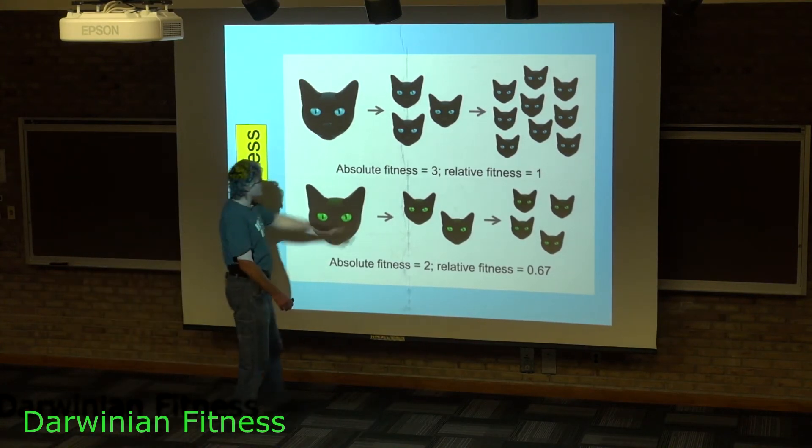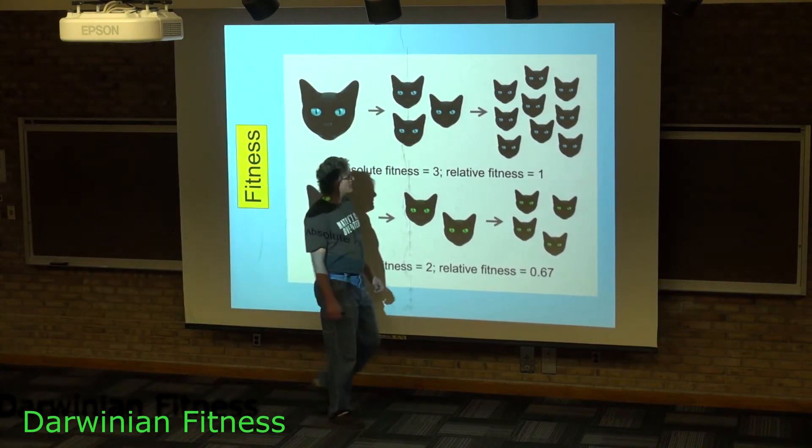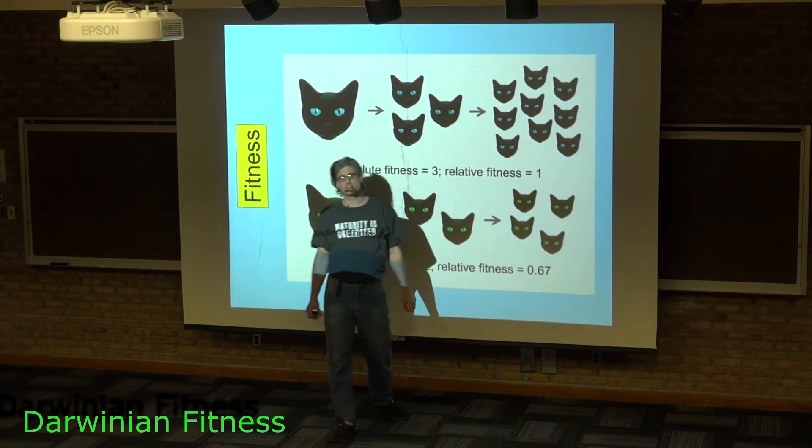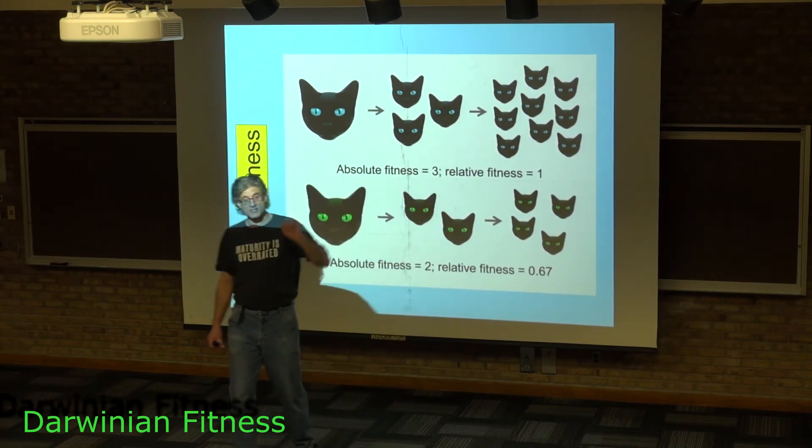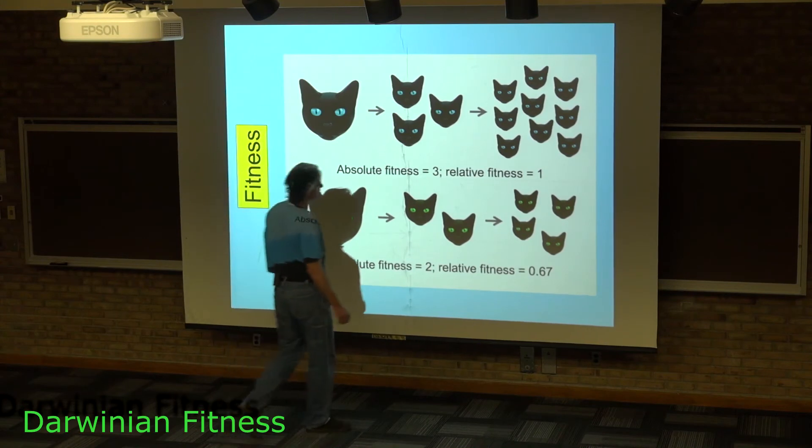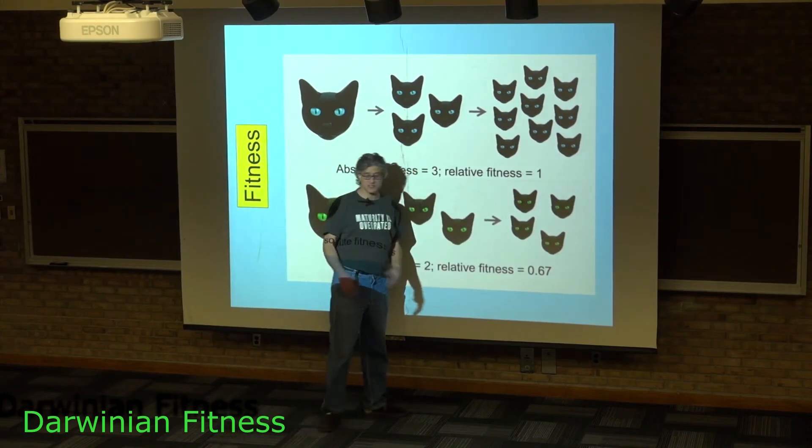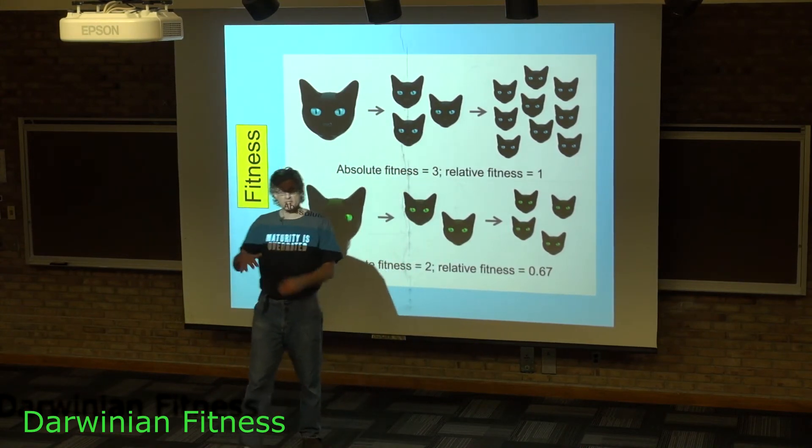It's often difficult to figure out absolute fitnesses, and this is in part because populations don't tend to always be increasing in size. Therefore, it's easier often to figure out relative fitnesses because if you have a population...